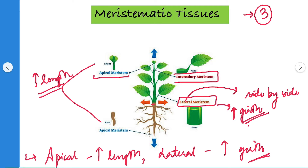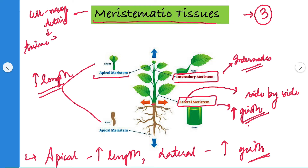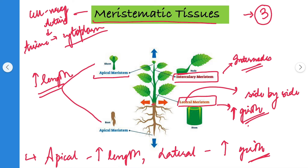The third type is intercalary meristem. Intercalary meristem is present at the base of the leaves and at the internodes. Because cells have to divide continuously, the cells are very active and are filled with cytoplasm. They have a lot of energy and nutrients requirement to perform the various functions of the tissues.